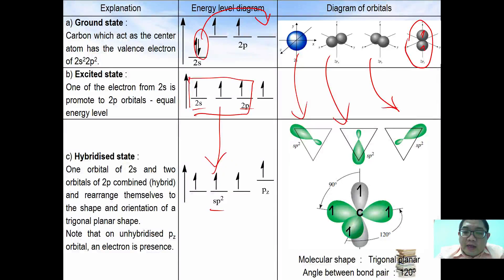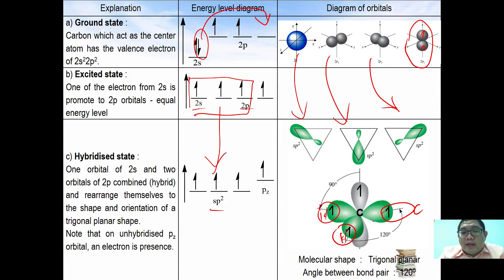The overall structure for one carbon has sp2 hybrid orbitals — some used to overlap with hydrogen and one used to overlap with the other carbon. The shape formed is trigonal planar and the angle between the sp2 orbitals is 120 degrees.